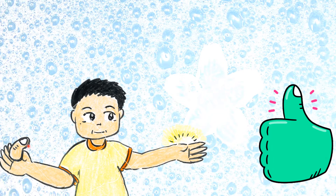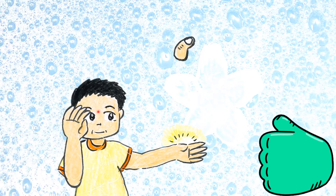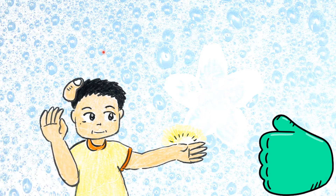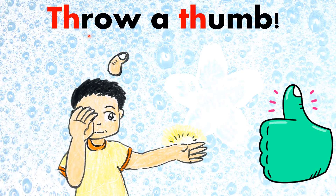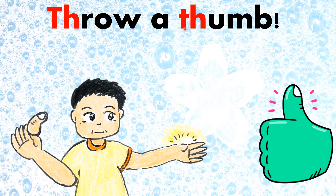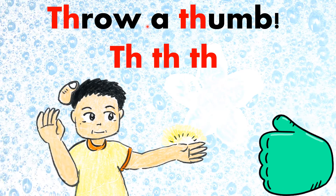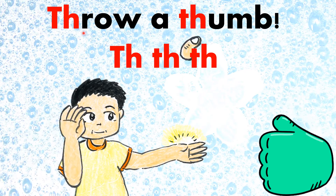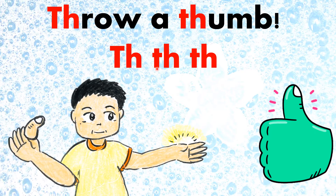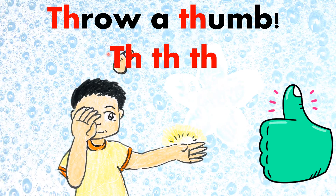This is a thumb, and the boy is throwing the thumb. So we will make a song about what the boy is doing: throw a thumb, throw a thumb, throw a thumb, throw a thumb — that is the sound of TH.